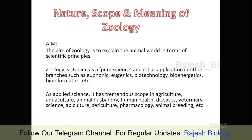As an applied science, Zoology is also applied to other sciences. For example, biology applied to physics gives biophysics; biology applied to chemistry gives biochemistry. Most machineries like ECG work by the principles of physics only, and some machines work on thermodynamics which help in the medical field. As applied science, Zoology has tremendous scope in agriculture, aquaculture, animal husbandry, veterinary, human health, diseases, apiculture, sericulture, pharmacology, and animal breeding.